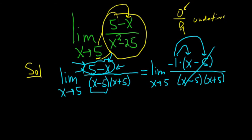The x minus 5 is canceled, so we end up with the limit as x approaches 5: negative 1 over x plus 5.